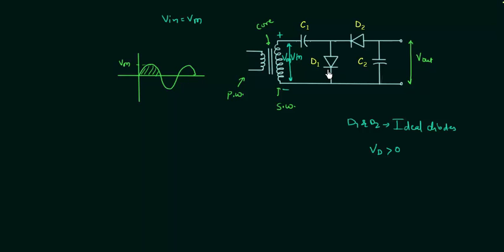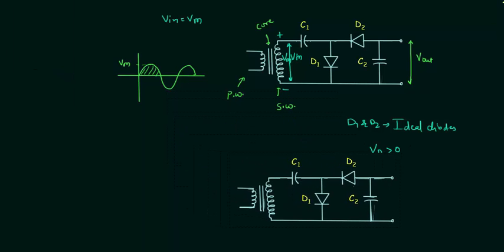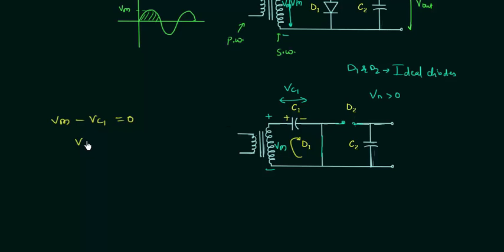So diode D1 is forward biased and we replace it with its equivalent model. For an ideal diode in forward bias, the equivalent model is a short circuit, and diode D2 will be open circuited because it is reverse biased. In the modified circuit, D1 is short circuited and D2 is open circuited. We find the voltage across capacitor C1 (Vc1) using Kirchhoff's voltage law: Vm minus Vc1 equals 0, so Vc1 equals Vm. During this positive half cycle, capacitor C1 charges to voltage Vm.